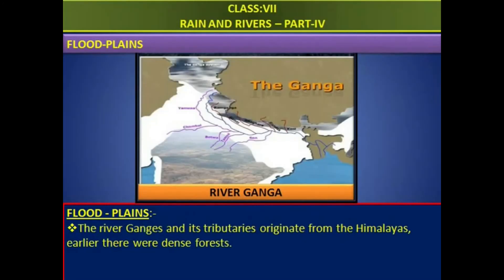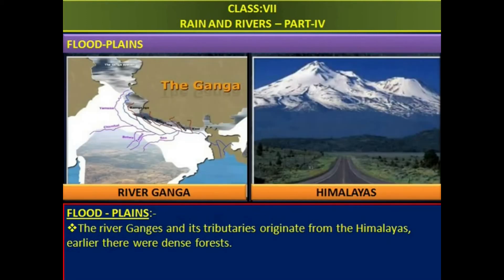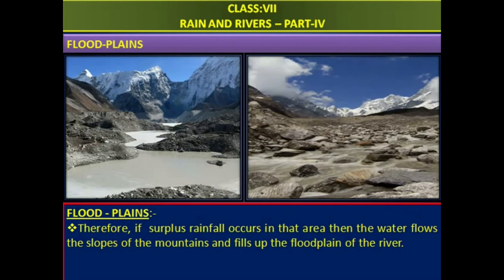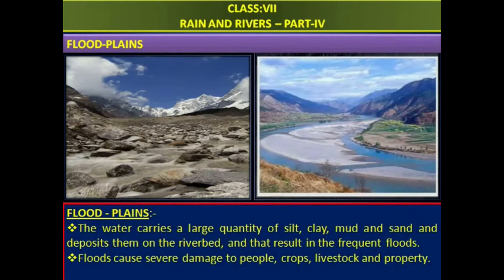River Ganges and its tributaries originate from the Himalayas. Earlier, there were dense forests. Therefore, if surplus rainfall occurs in that area, the water flows down the slopes of the mountains and fills up the floodplains of the rivers. The water carries a large quantity of silt, clay, mud, and sand and deposits them on the riverbed, and that results in frequent floods. Floods cause severe damage to people, crops, livestock, and property.